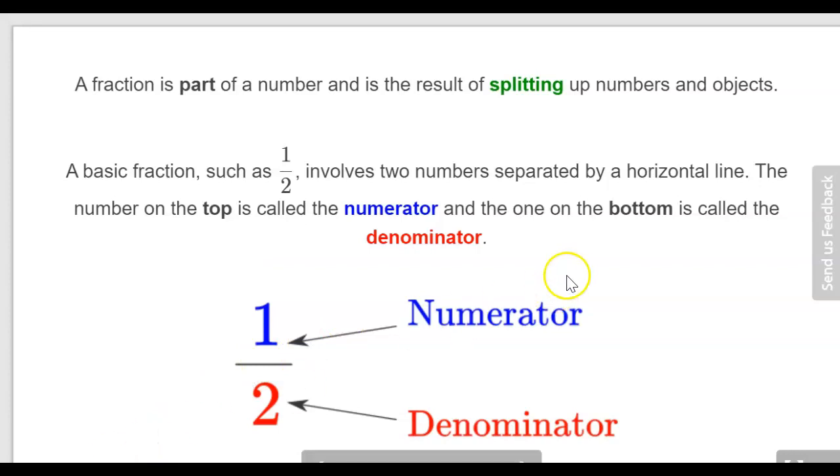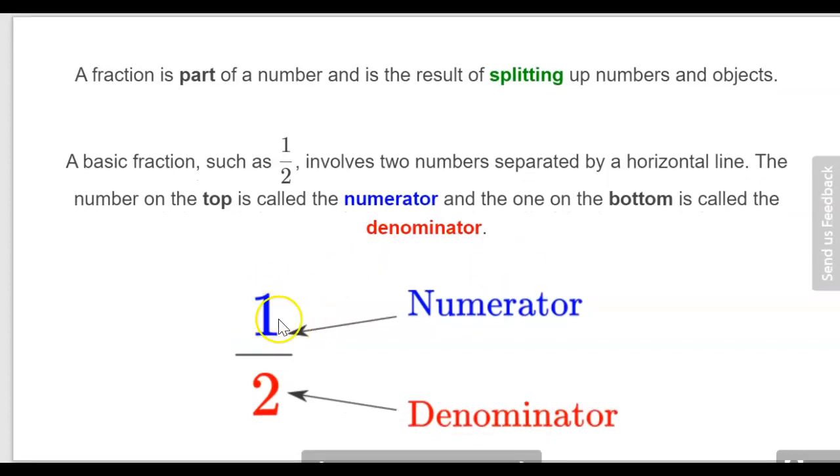Some terminology: rather than saying top number and bottom number, let's get used to calling the top number the numerator and the bottom number the denominator. For the fraction one-half, the numerator is one and the denominator is two. You might just want to make a note of that in your exercise books now. Start a new page, label it fractions, and write out this example fraction and label the numerator and denominator.